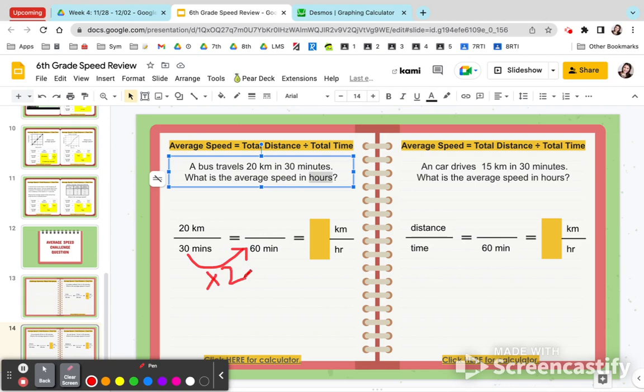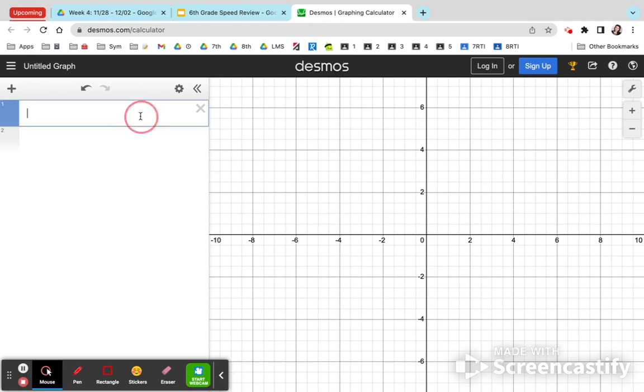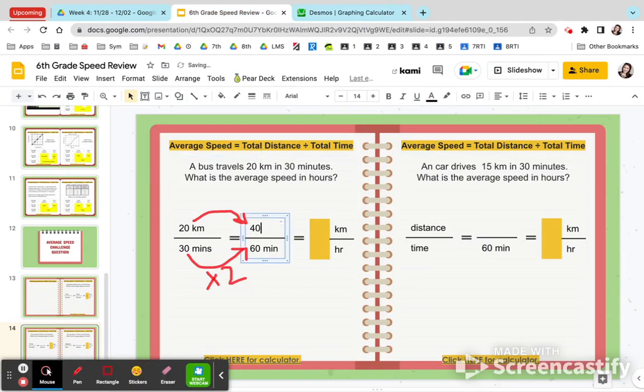So before we can do anything else, we know that in order to get from 30 minutes to 60 minutes, we're going to multiply by two. Okay, then whatever we do on the bottom, we do to the top. So 20 times two. So 20 times two, you get 40. So 40 kilometers.